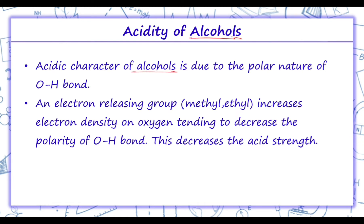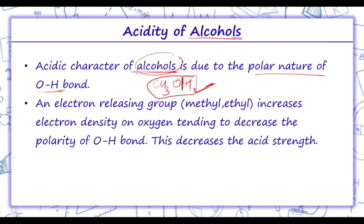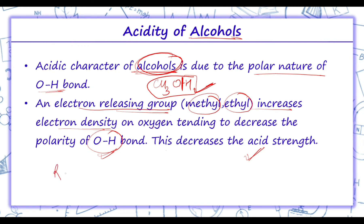The acidic character of alcohol is due to the polar nature of the O-H bond. For example, in CH3OH, the polar nature of this bond indicates the acidic character of alcohol. Now, electron-releasing groups such as methyl and ethyl increase electron density on oxygen, because of which polarity decreases and thus acidic character decreases.